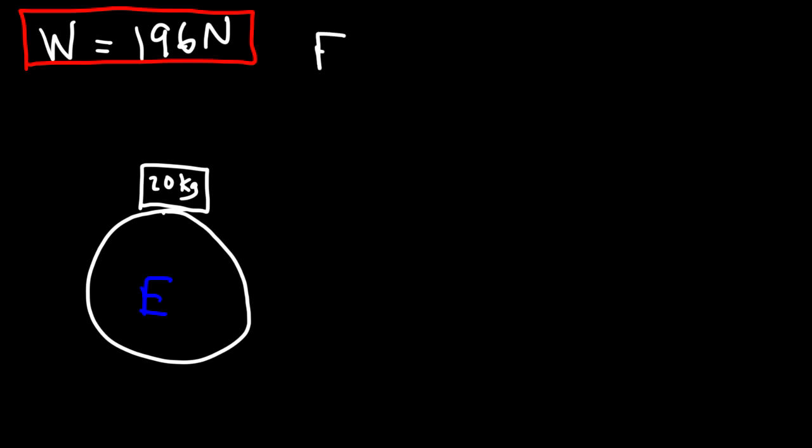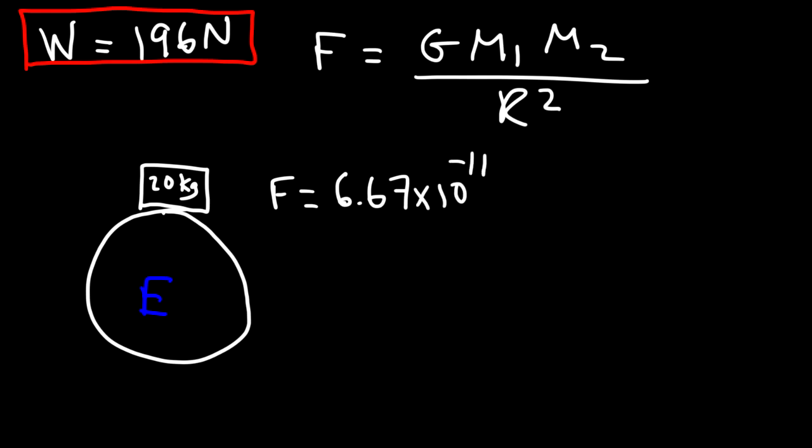Now let's see if we can get the same answer using the universal law of gravitation formula. So the formula was f is equal to g m1 m2 over r squared. Now g is the universal gravitation constant, which is 6.67 times 10 to the negative 11, and it's newtons times square meters divided by square kilograms.